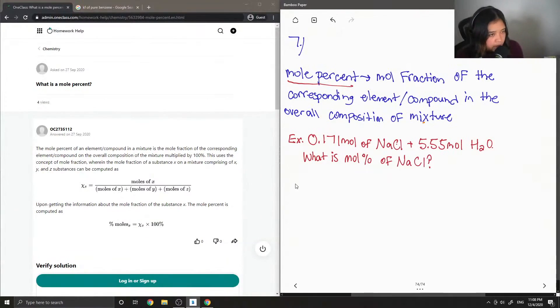Okay, so we denote mole percent as just x. So the x of NaCl is equal to the number of moles of NaCl divided by the total number of moles. So the total moles is just the sum of the moles of NaCl and water.